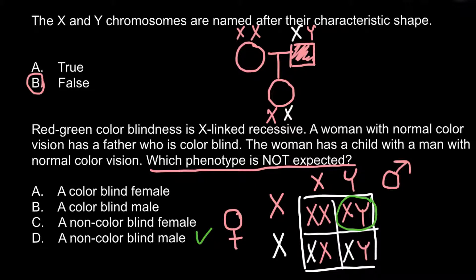Answer C: a non-colorblind female. Actually, all of the females would be non-colorblind. Those 50% of females who would be carriers would have one defective X chromosome, or defective gene on the X chromosome, but because they would also have one normal X chromosome with the normal allele for this trait, phenotypically they would also be normal — but would be carriers. So this is also an expected variant.